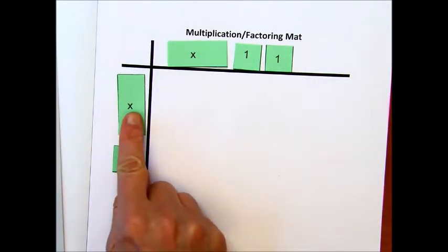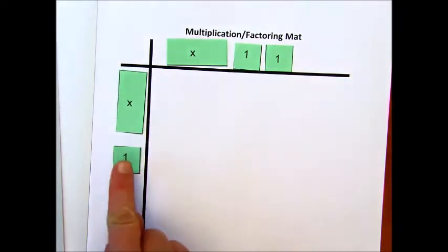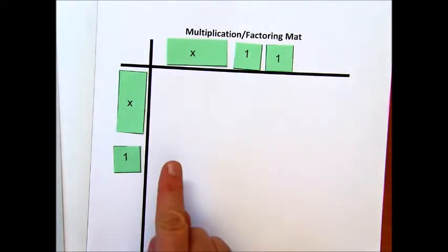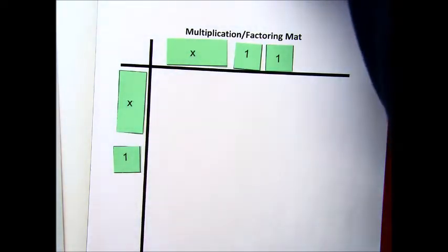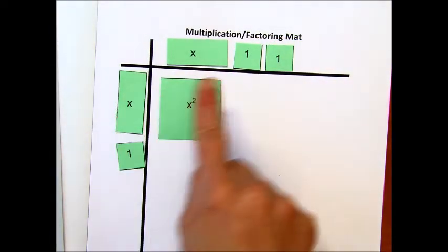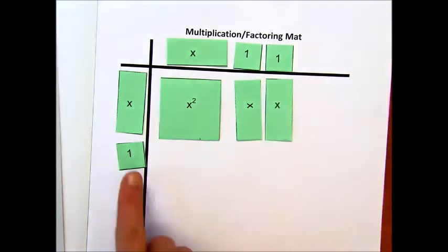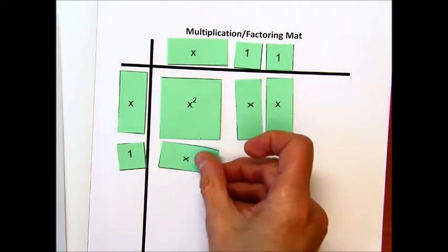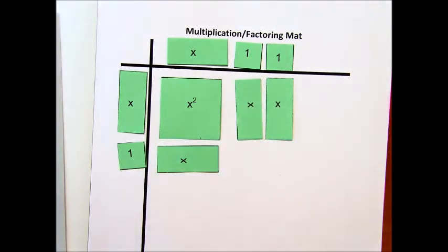We're going to start with this first term within the binomial and multiply it to each part. Then, we're going to take this term and multiply it to each part. So, x times x is x squared. And because they're both positive, this will be a positive x squared. x times 2 means we'll have 2x. 1 times x means we're just going to have an x. And 1 times 2 means we'll have 2.